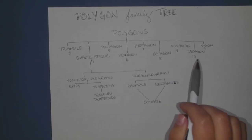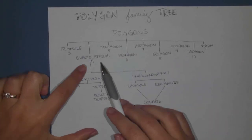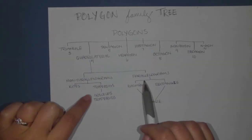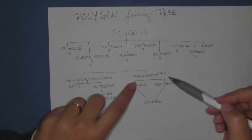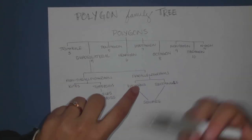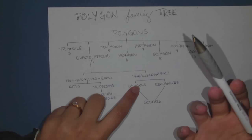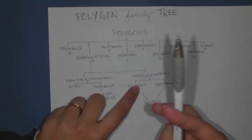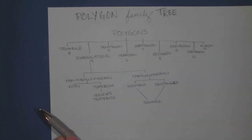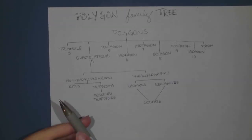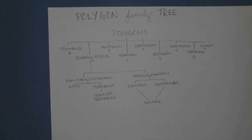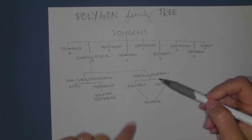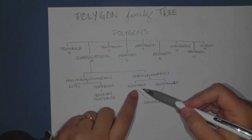There are all the polygons. Focusing on quadrilaterals, we break it down into parallelograms and non-parallelograms. You did that parallelogram discovery and found those five facts: opposite sides are parallel, opposite sides are congruent, opposite angles are congruent, diagonals bisect each other, and consecutive angles are supplementary.